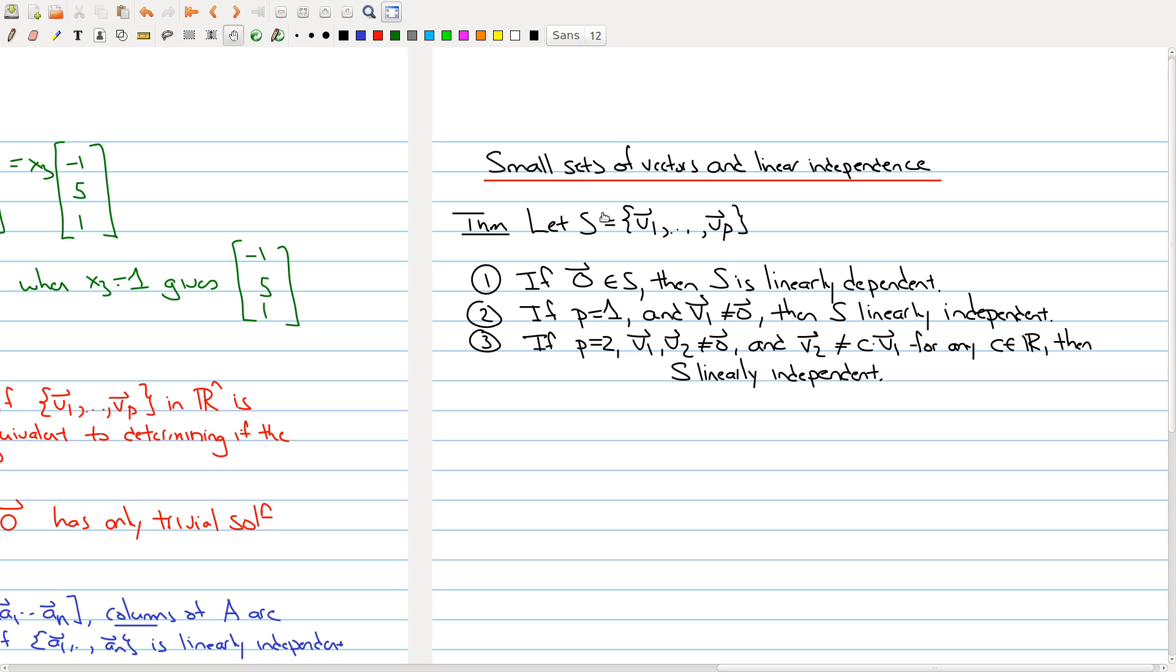The first statement says that if no matter how many vectors you're given, if one of those vectors is the zero vector, then the set S is linearly dependent. Let me give you a proof of that fact. Suppose that zero is inside of my set S, which is one of these vectors. We can relabel things to say that it actually appears as the last one.